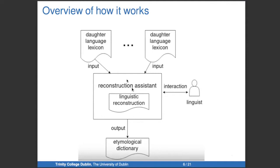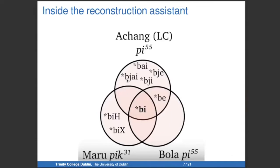The data goes into the reconstruction assistant, and the linguist interacts with it — rerunning the software and adjusting things — and in theory it outputs an etymological dictionary. We have attested forms in Achang, in Bola, and in Maru (called Longsu in Chinese, which I'll use for the rest of this presentation). We have hypotheses about sound changes formalized as finite state transducers, and the software runs those changes backwards on the attested forms to propose reconstructions.